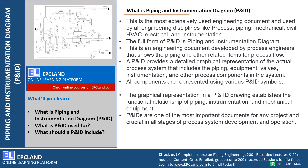P&ID is an engineering document developed by process engineers. Process engineers are somebody who provides input to all these disciplines. It shows piping and other related process flows — how the piping is connected from one equipment to another, how the process flow is there. It provides a detailed graphical representation of the actual process system, including piping, equipment, valves, instrumentation, and other process components.